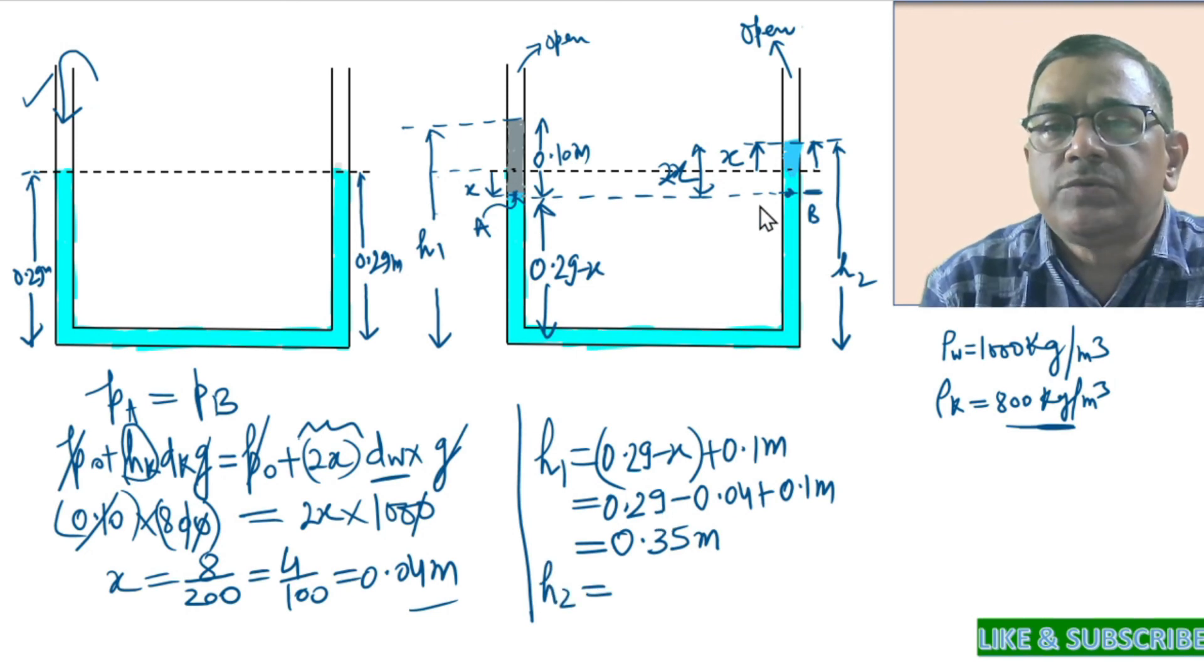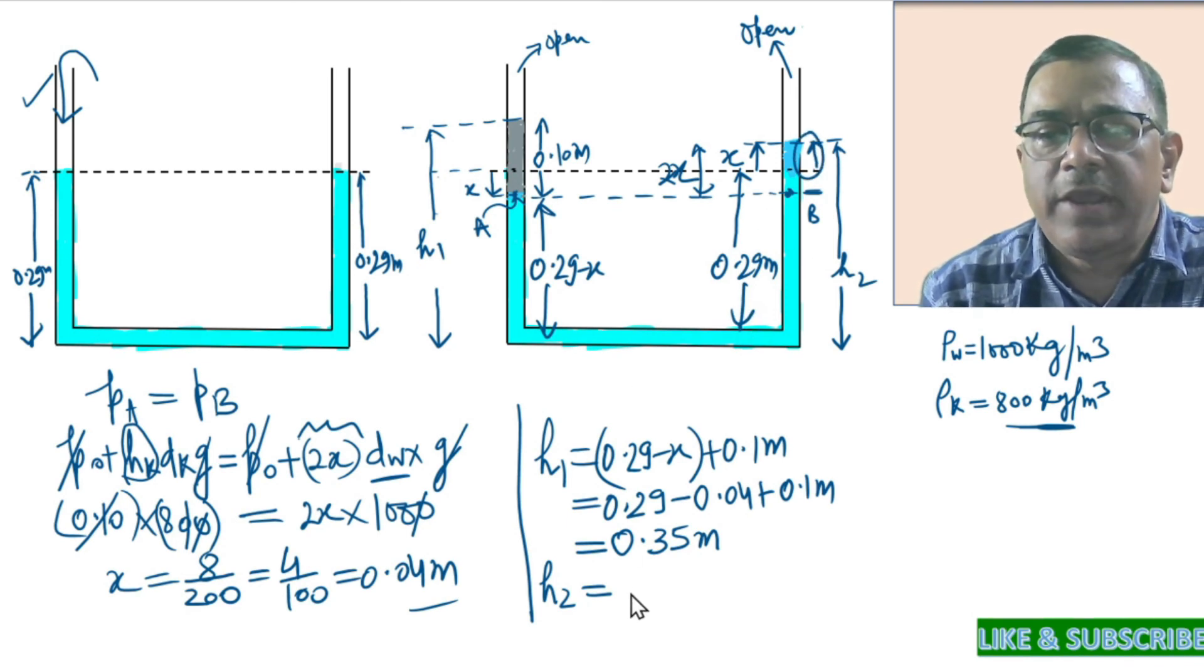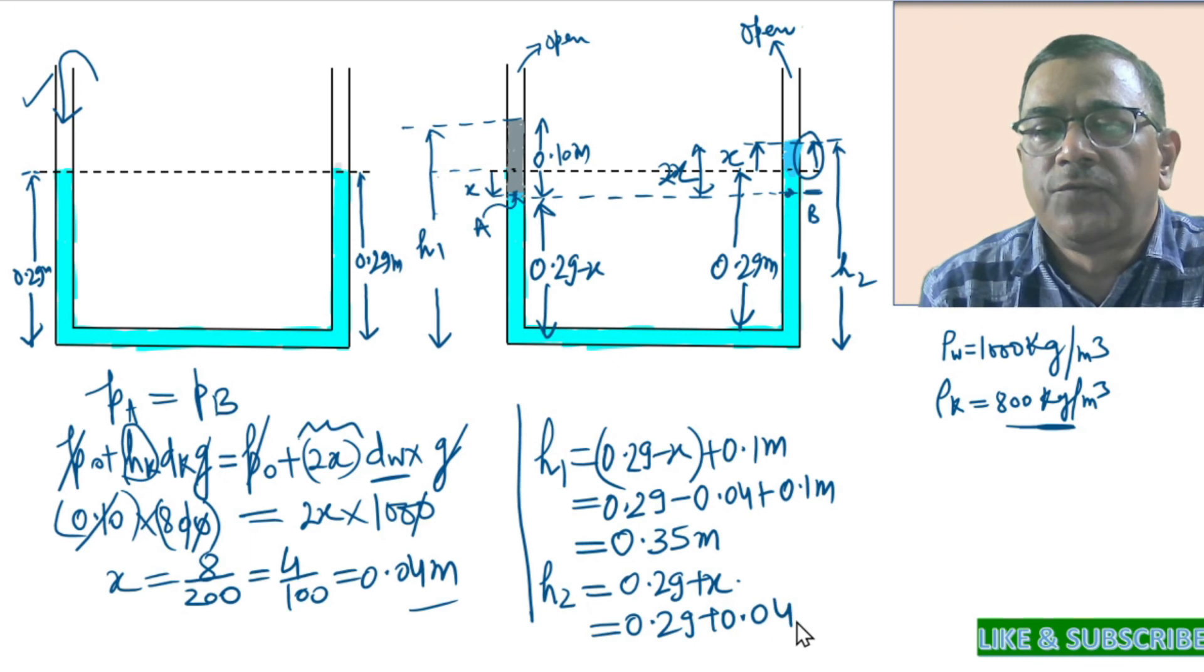Also, H2 equals this distance, this separation. This separation equals 0.29 meters and you need to add X to get the value H2. H2 equals 0.29 plus X, which is 0.29 plus 0.04, and this equals 0.33 meters.